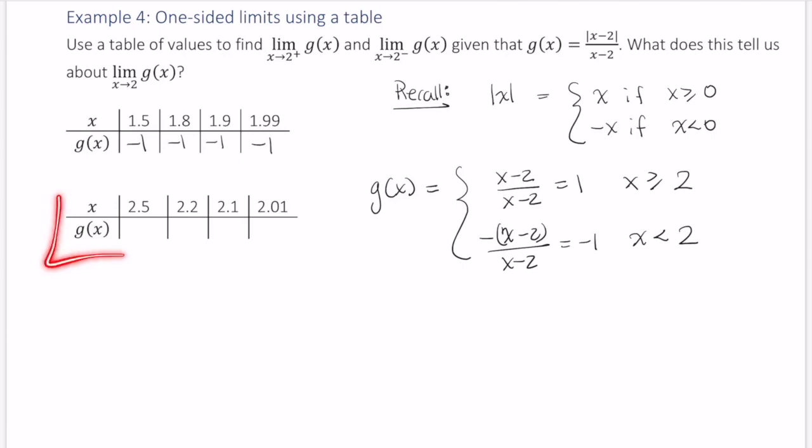Now, what about this lower table? Well, all these values are larger than 2, so all of these are just positive 1.